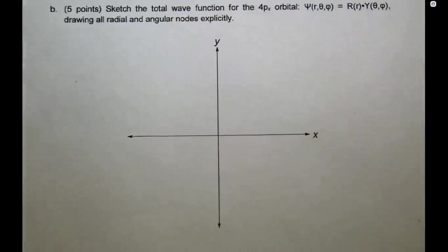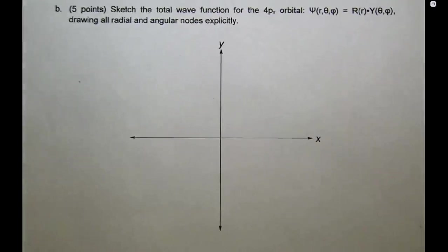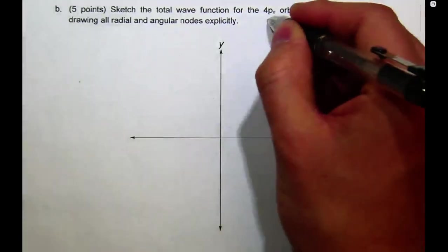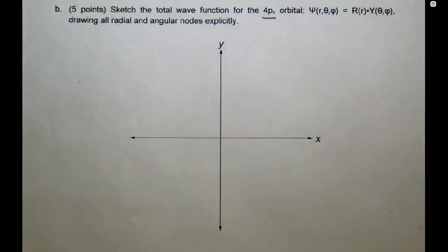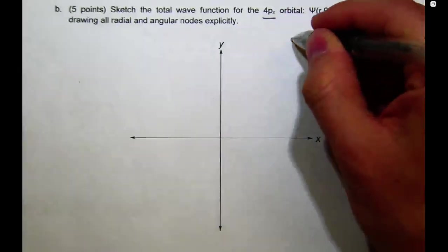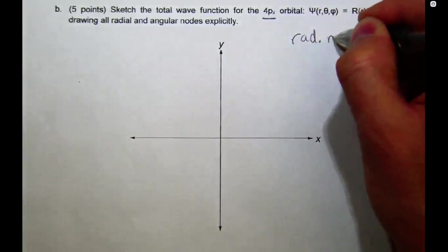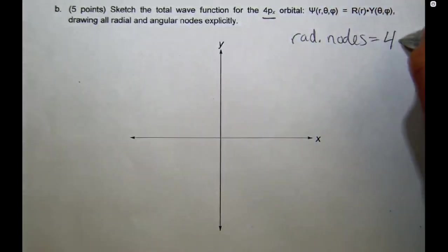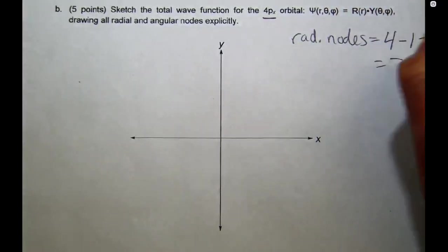So now, we're going to sketch the total wave function, or the picture, of the 4px orbital based on what we drew above. So, I have 4px. I'm going to start over again in the same way, by calculating radial nodes. Equals 4 minus 1 minus 1 equals 2.